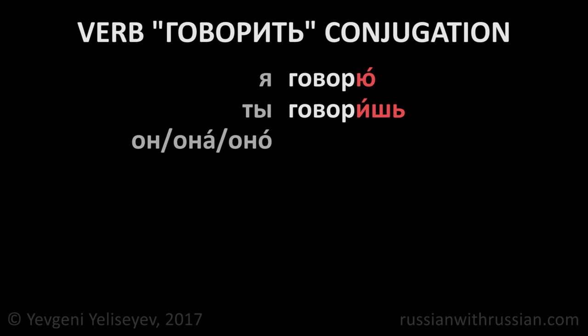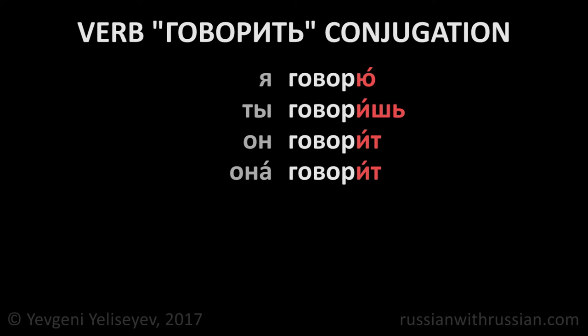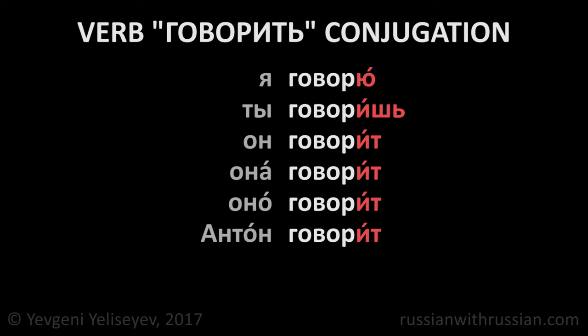In the third person singular Он, Она, Оно, the ending is ИТ. Он говорит — he speaks. Она говорит — she speaks. Оно говорит — it speaks. Антон говорит — Anton speaks.